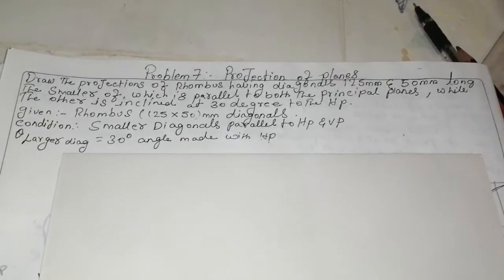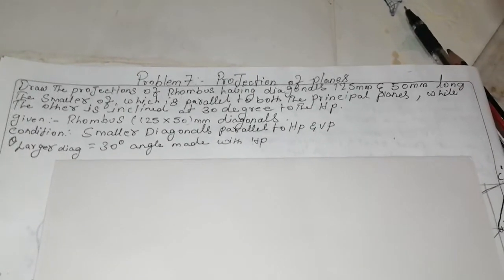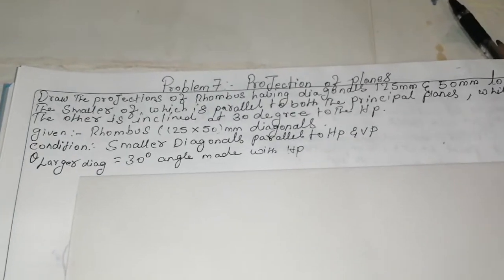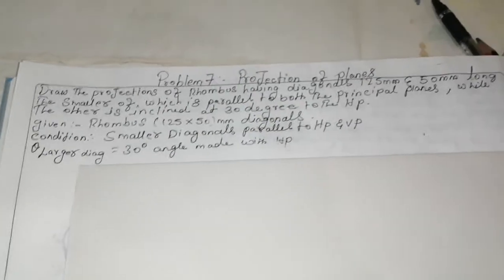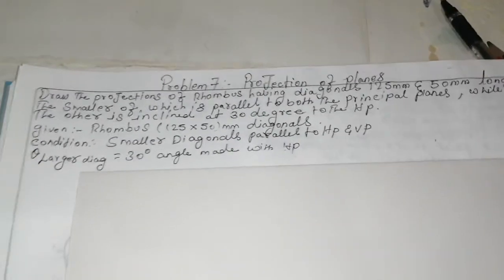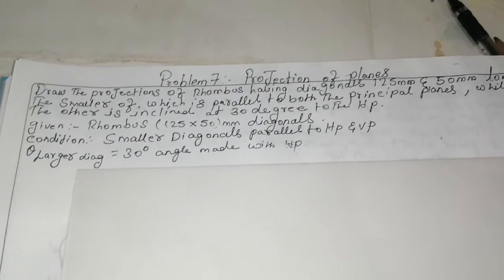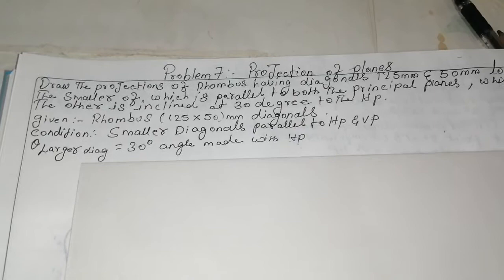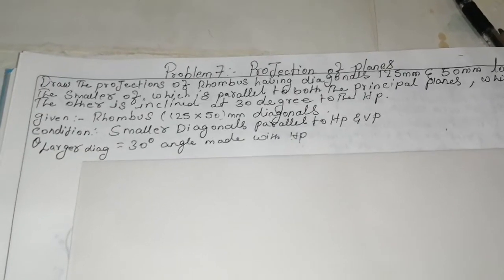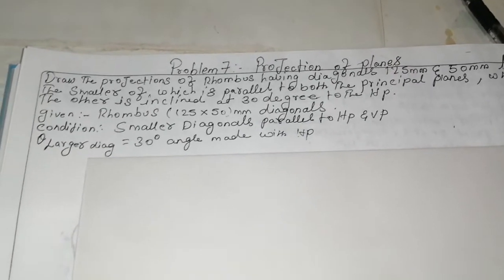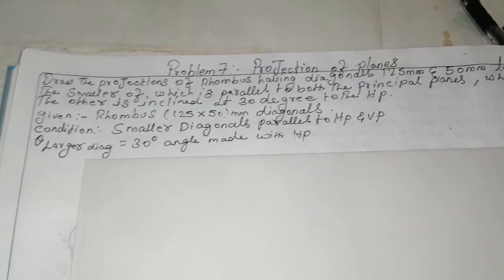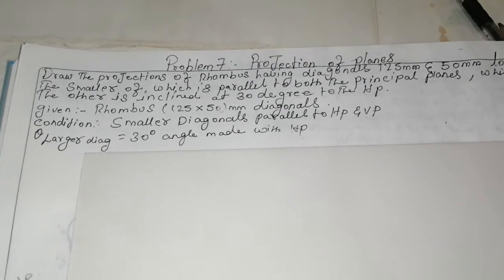The smaller diagonal is parallel to both principal planes, while the other is inclined at 30 degrees to the HP. Given data: rhombus diagonals 125 mm by 50 mm. Condition: smaller diagonal parallel to HP and VP. The larger diagonal makes a 30 degree angle with the HP.